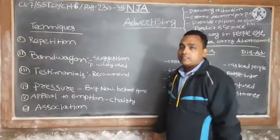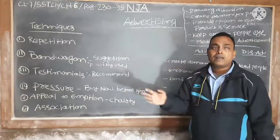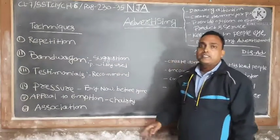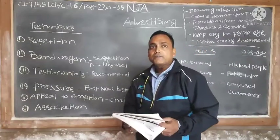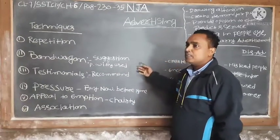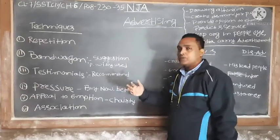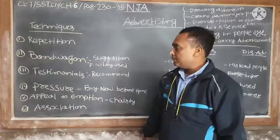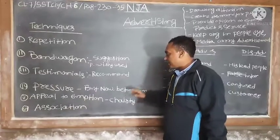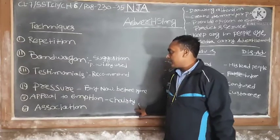The fifth technique is appeal to emotions. This is generally done by charitable trusts. For example, during COVID, an appeal is made: you should contribute some money, club membership, or food so that we can help the people affected by COVID — that charity appeal comes under this activity.